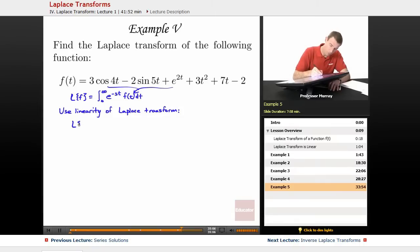So L of 1, we figured this out back in example 1. It was 1 over s. L of t was 1 over s squared. L of t squared was 2 over s cubed.